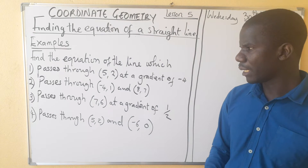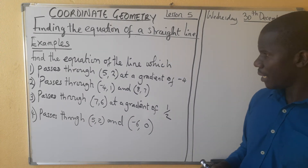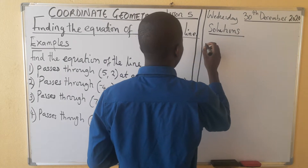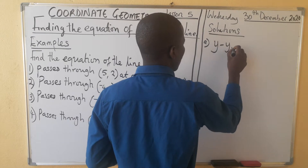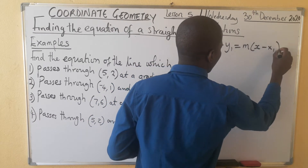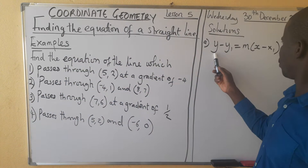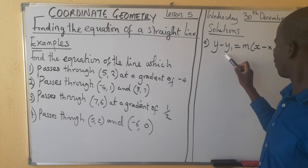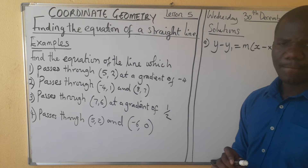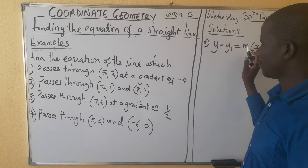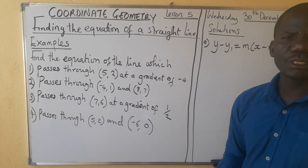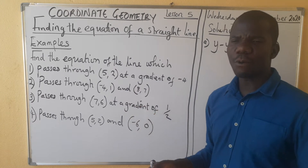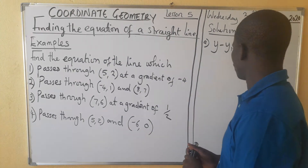We also need the gradient. To write the equation I use the formula: y minus y1 equals m times x minus x1. The y and x will not be replaced — what I'm going to replace are y1, x1, and the gradient. In this first case, the gradient has been provided and both coordinates for x and y are given, so it is straightforward.